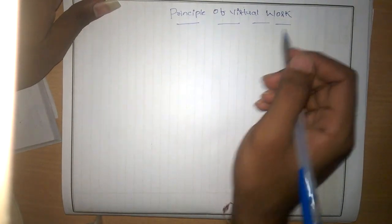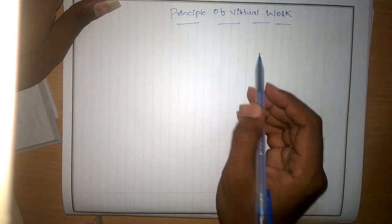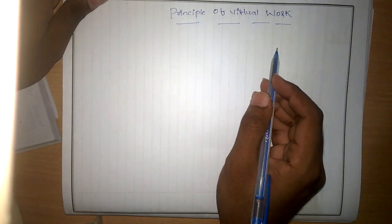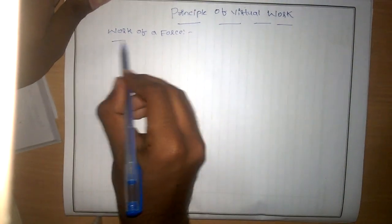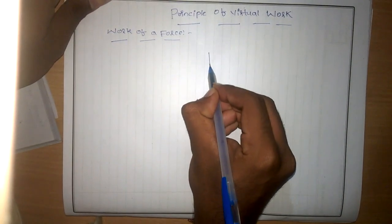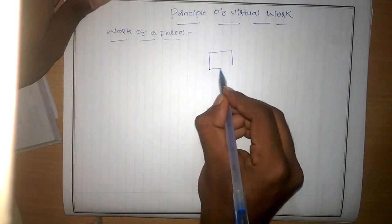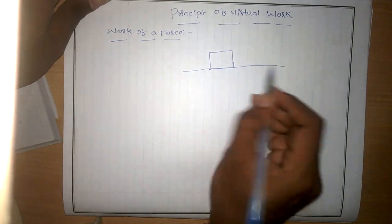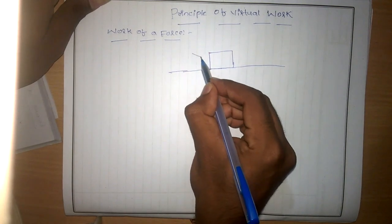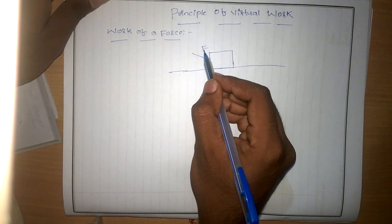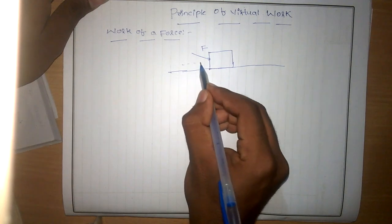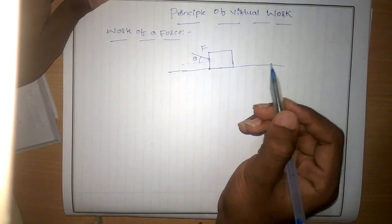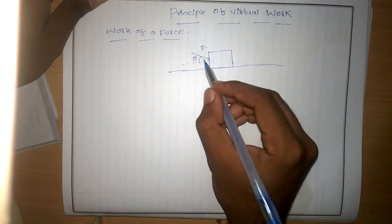Here we discuss the topic: Principle of Virtual Work. First, we discuss the work of a force. Consider a body resting on a support and a force F acting on it. We know that force is a vector quantity, and force F is making an angle theta with the horizontal direction.